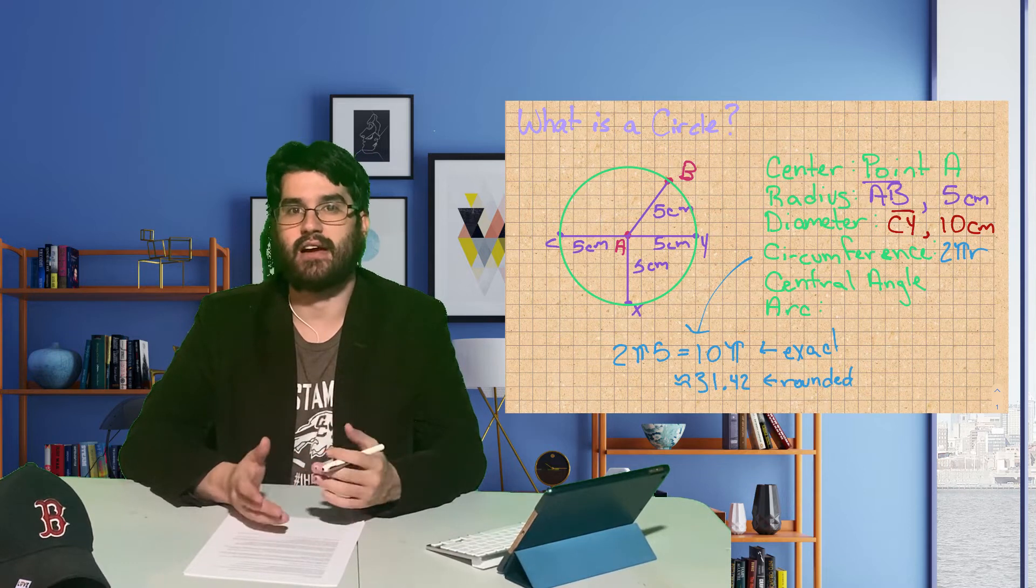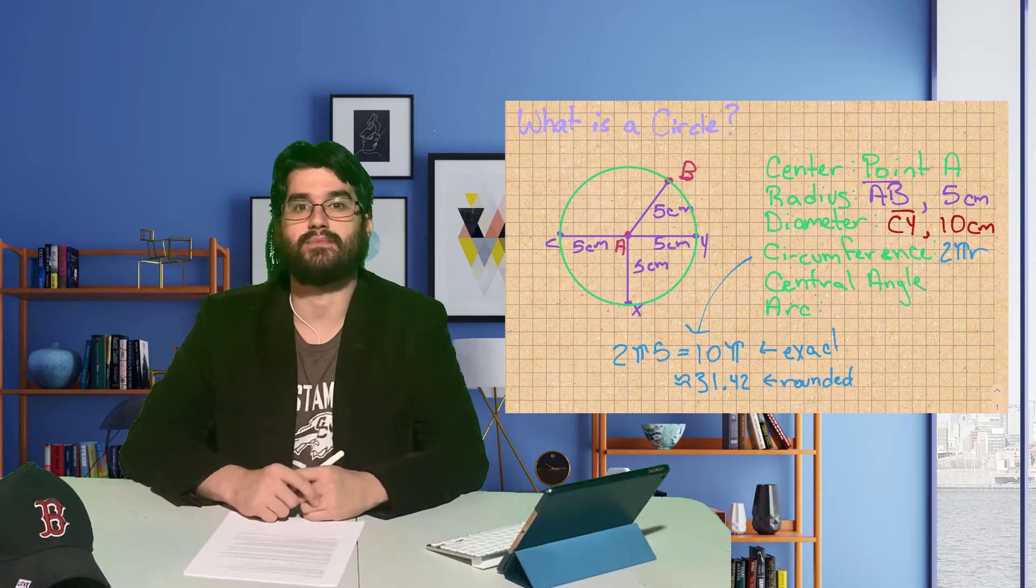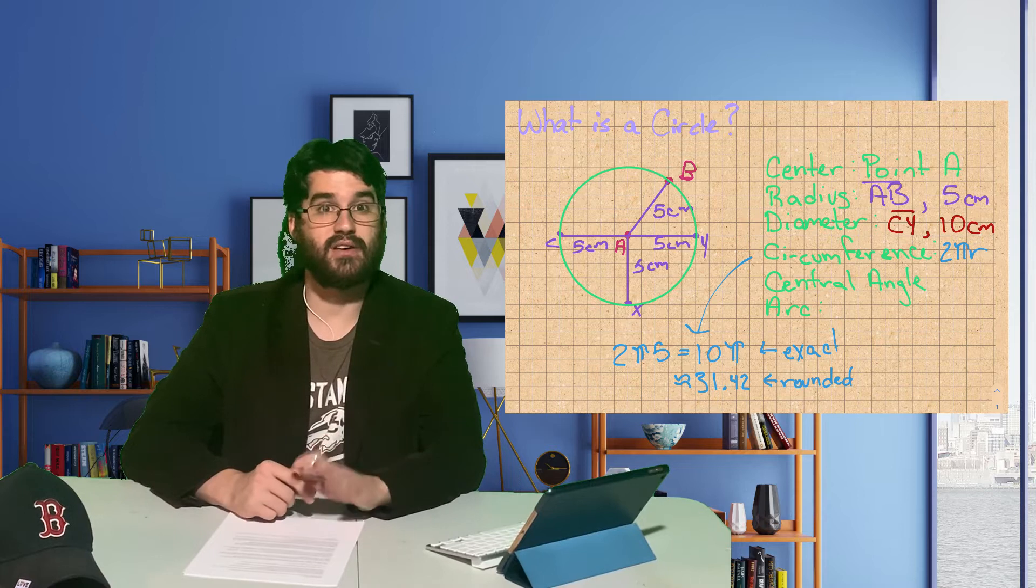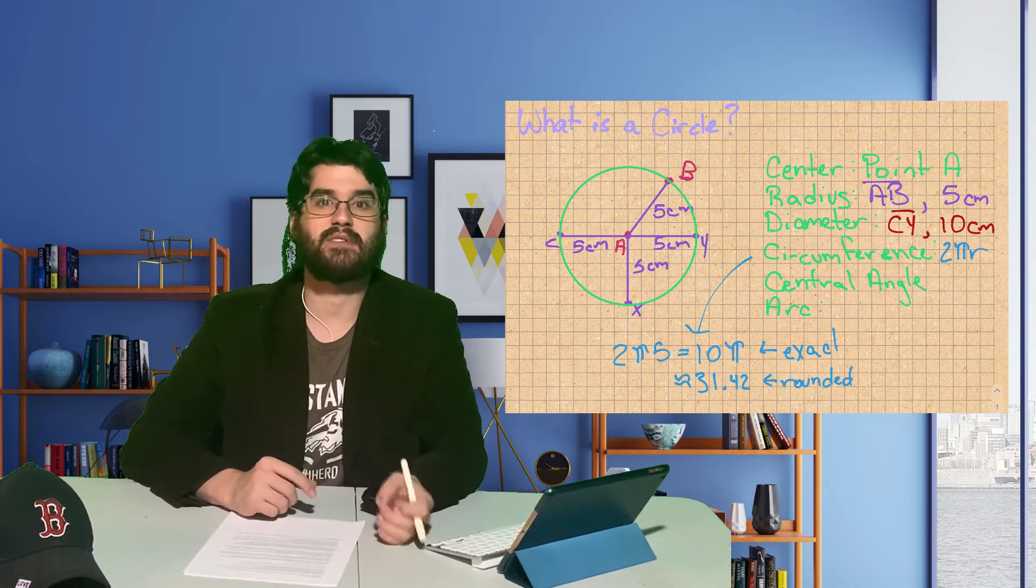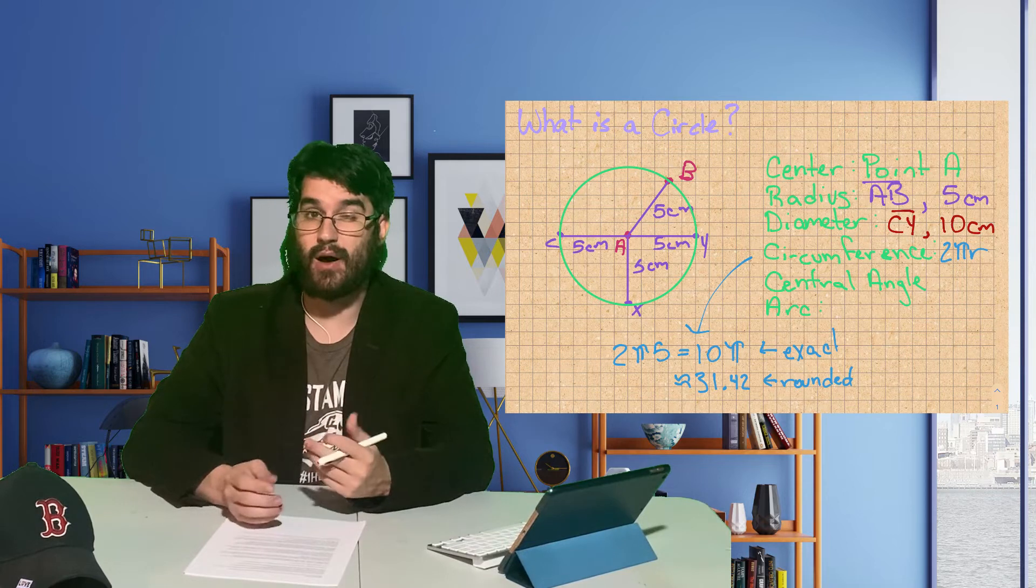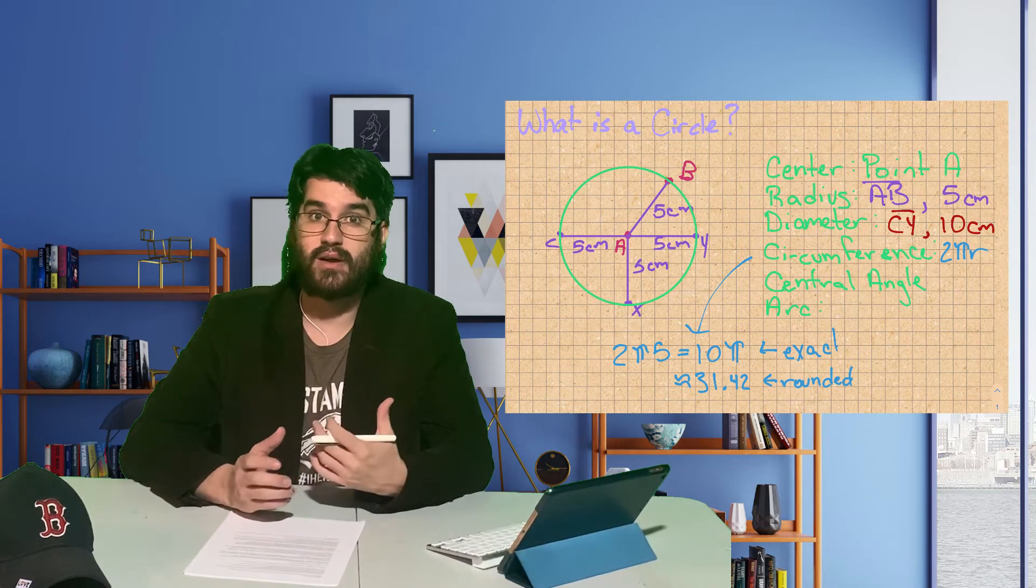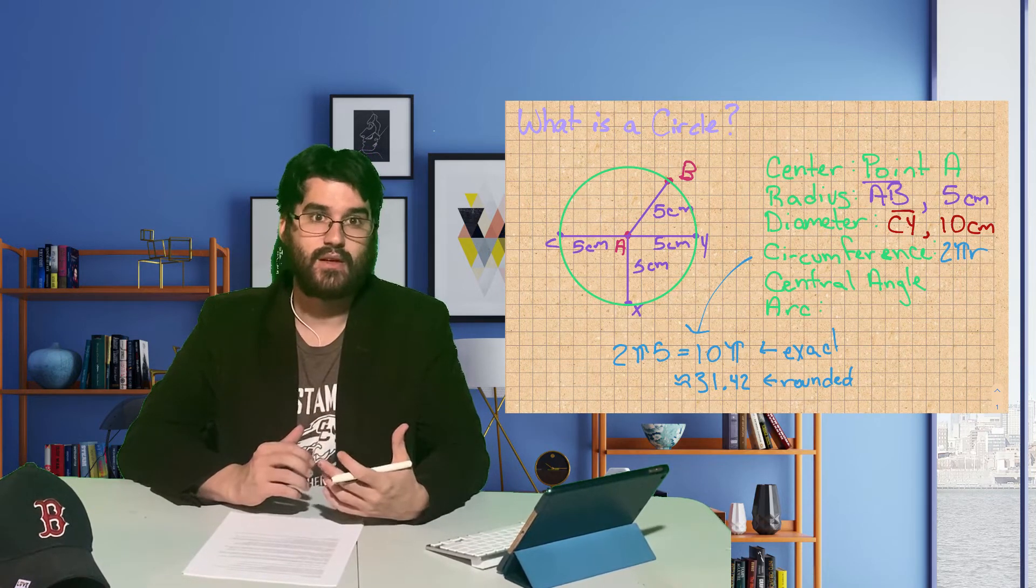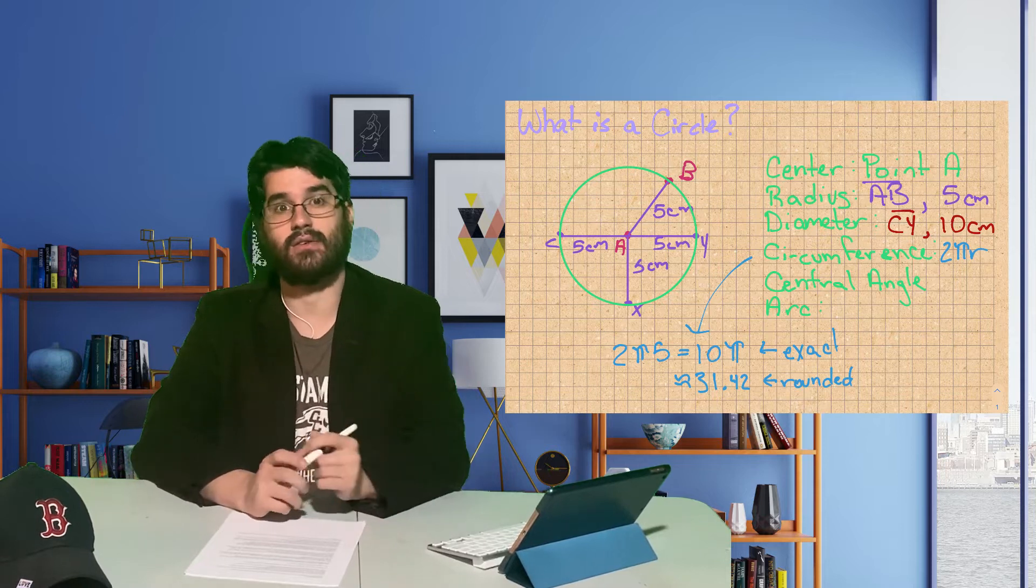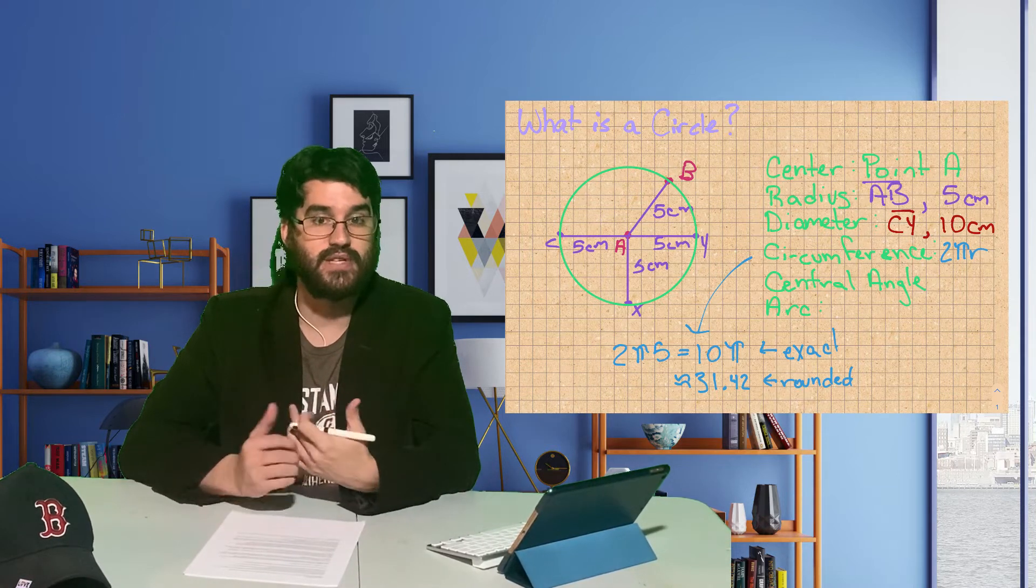And then we can use our calculator to get the rounded version of the answer. So using the π button on your calculator, you can type in 10 times π, and it will give you something around 31.42. So the circumference of this circle is 31.42 centimeters.